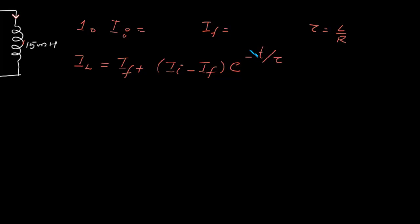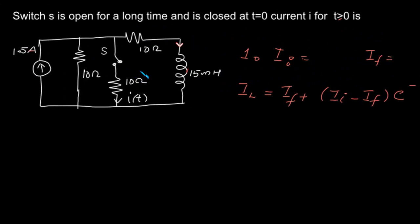By using these equations, first we will find the current through the inductor, then analyze how to find the current through the 10 ohm resistor. To find the initial current, we assume the switch is open for a long time. In the circuit we have two 10 ohm resistors and the inductor, and the transient period is over. The inductor for DC current acts as a short circuit, so we have two 10 ohm resistors in parallel.